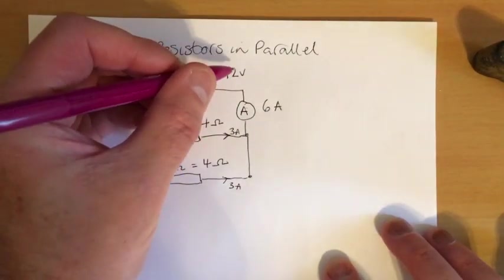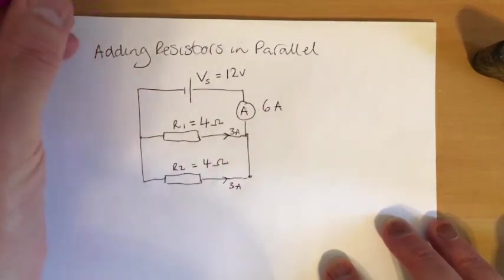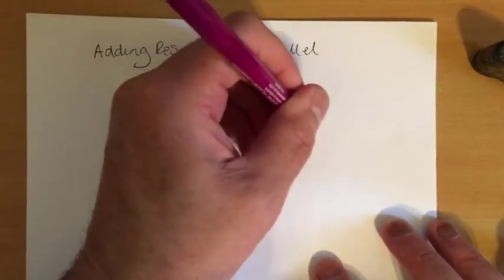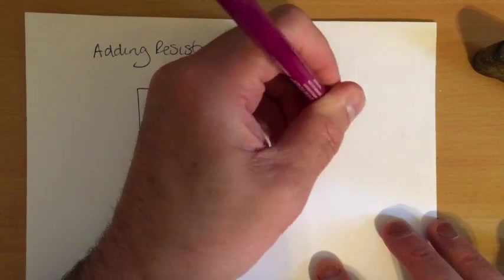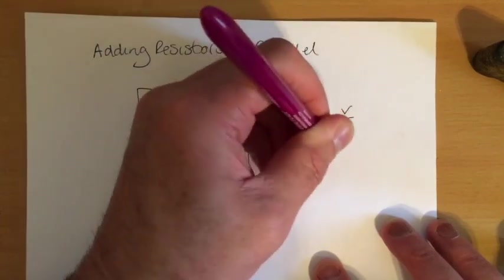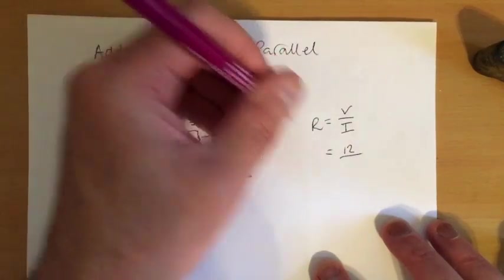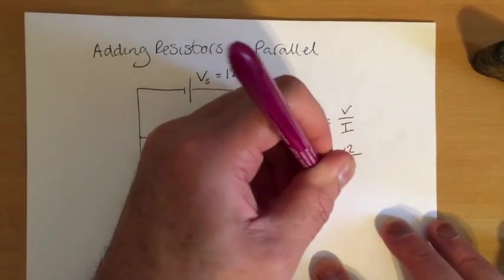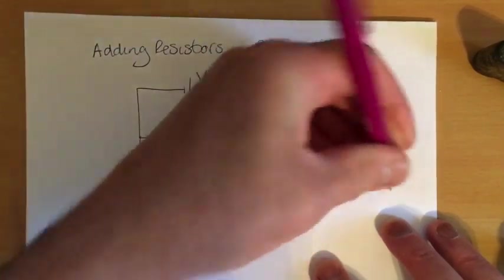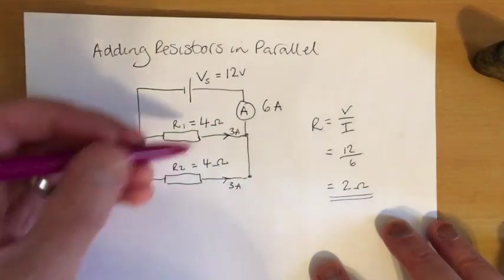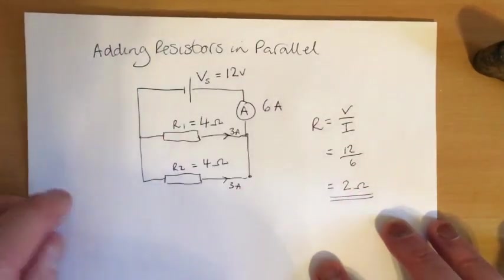Now, if we have 12 volts and a total of 6 amps, then using Ohm's law again, the total resistance of the circuit is the total voltage divided by the total current, which is 2 ohms. Our problem is, how do we add 4 and 4 and get 2?